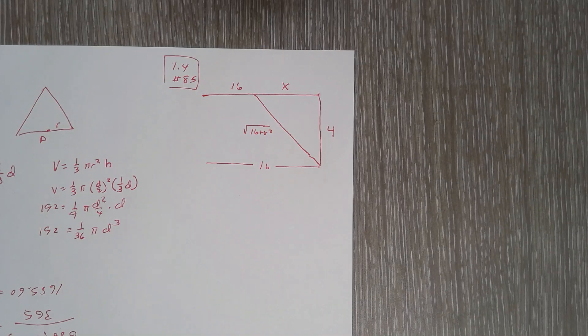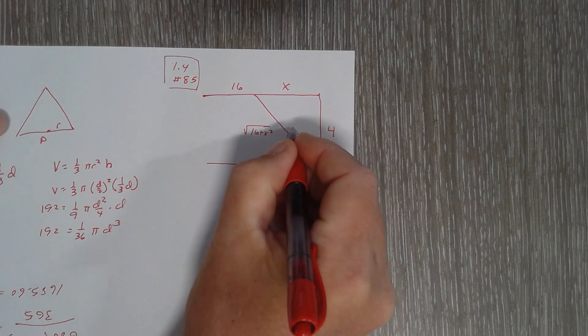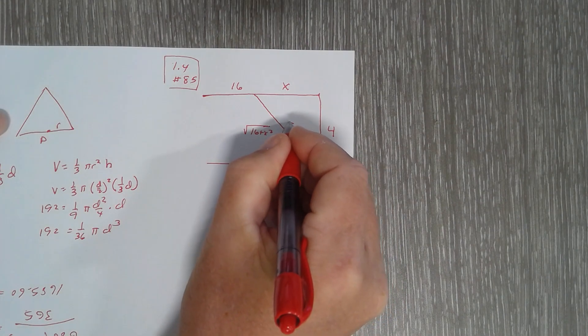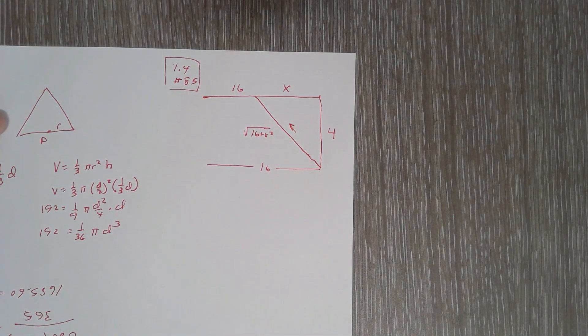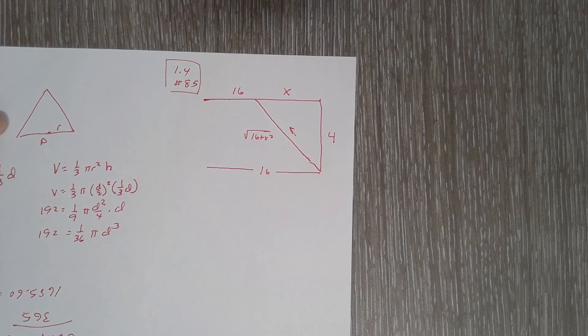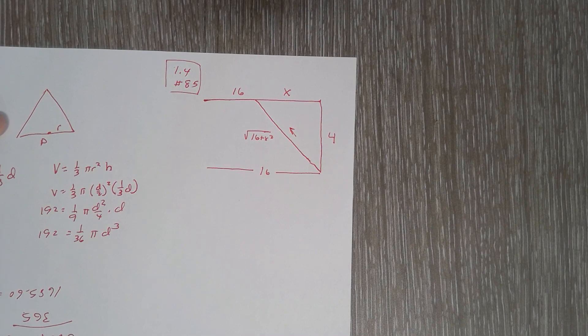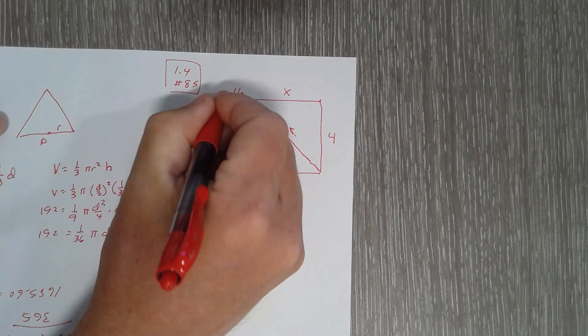Okay, number 85. They give us a diagram which shows the person is going to swim along this direction, and then they're going to run along the path as shown in the diagram in this direction.